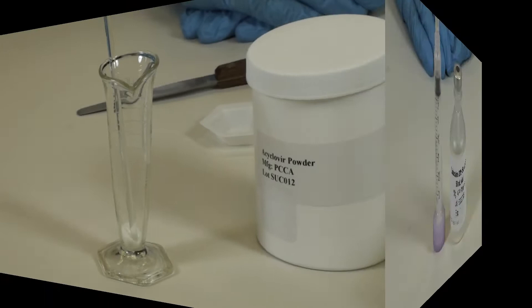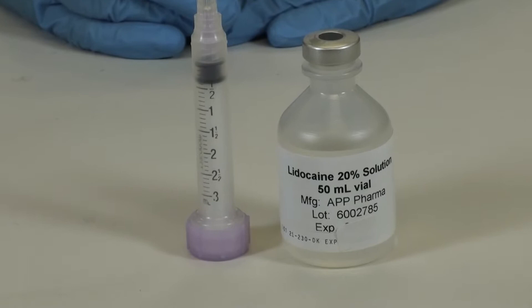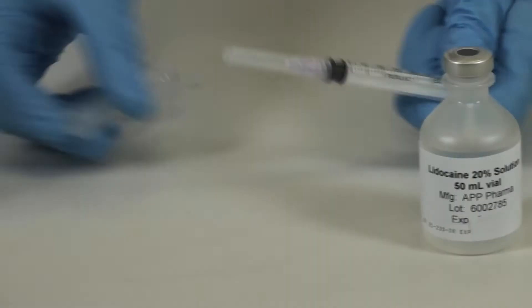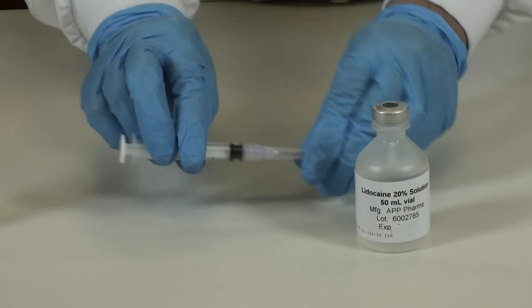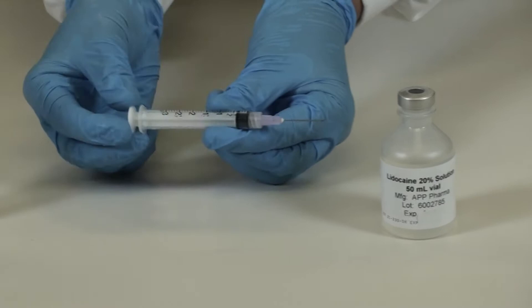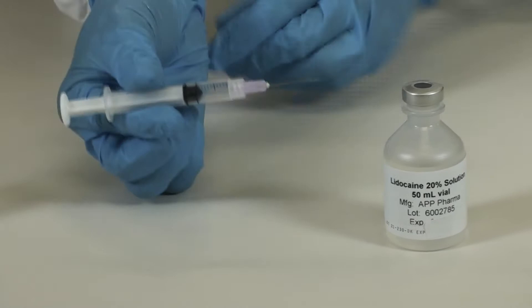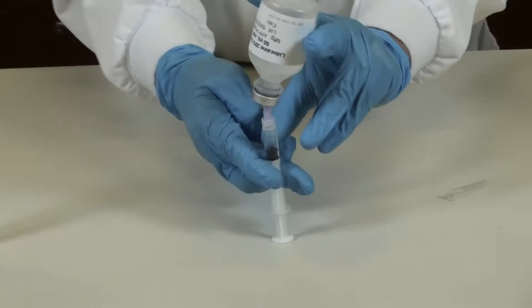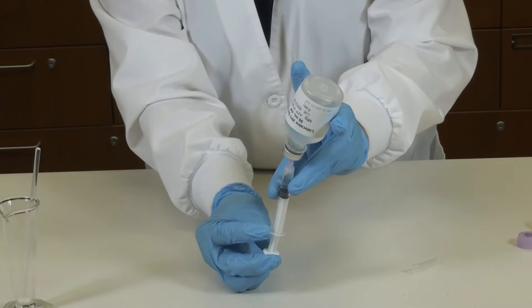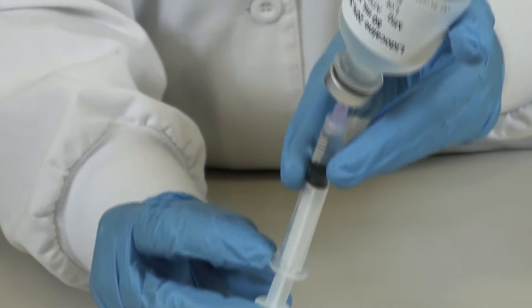This step we're going to measure the required amount of 20% lidocaine solution. We will be using a 3 ml syringe with a needle attached. Remember to carefully remove the needle cap away from your fingers. Put the required amount of air for the volume you want to remove into your syringe. Go into your vial and withdraw the required volume. You want to be sure that you get rid of the air bubbles.